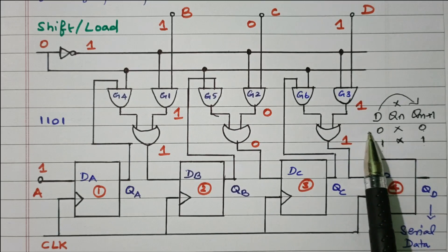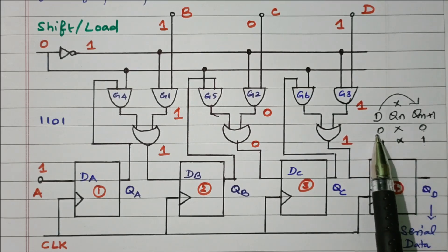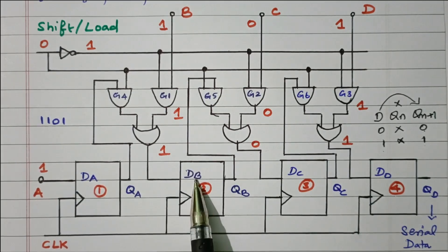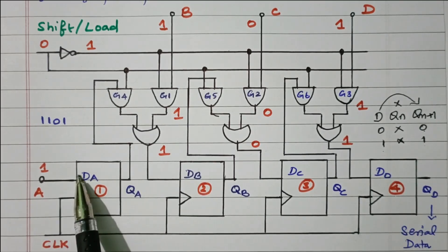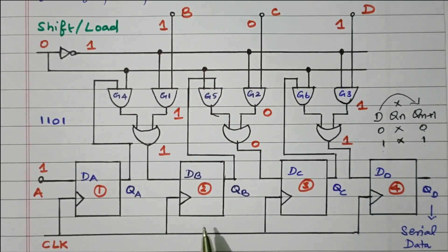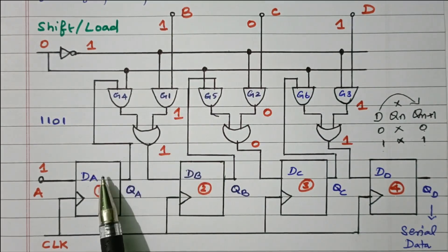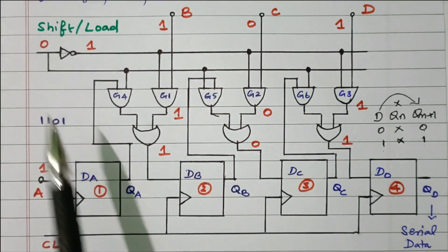The data entered at the D input will be available at the output, so we can easily use it for loading data or shifting data — we can pass data parallelly or serially. The input will be reflected at the output; that is the main reason we use the D flip-flop. The flip-flops are A, B, C, D with inputs DA, DB, DC, and DD, and outputs QA, QB, QC, and QD. Because of parallel input and serial output, there are two modes available: we can parallelly load the data at one time, or we can shift the data from one flip-flop to another.